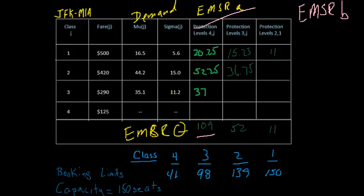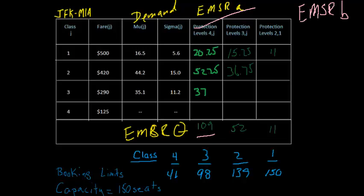EMSR-B takes a different approach to getting to the same answer. Instead of calculating individual protection levels and then aggregating those protection levels, it first aggregates the demand and then calculates one protection level for the pool of demand for these three fare classes. It calculates only one protection level using Littlewood's rule for fare class 4 against this pool of fare classes. The intuition and rationale behind this approach is as follows.